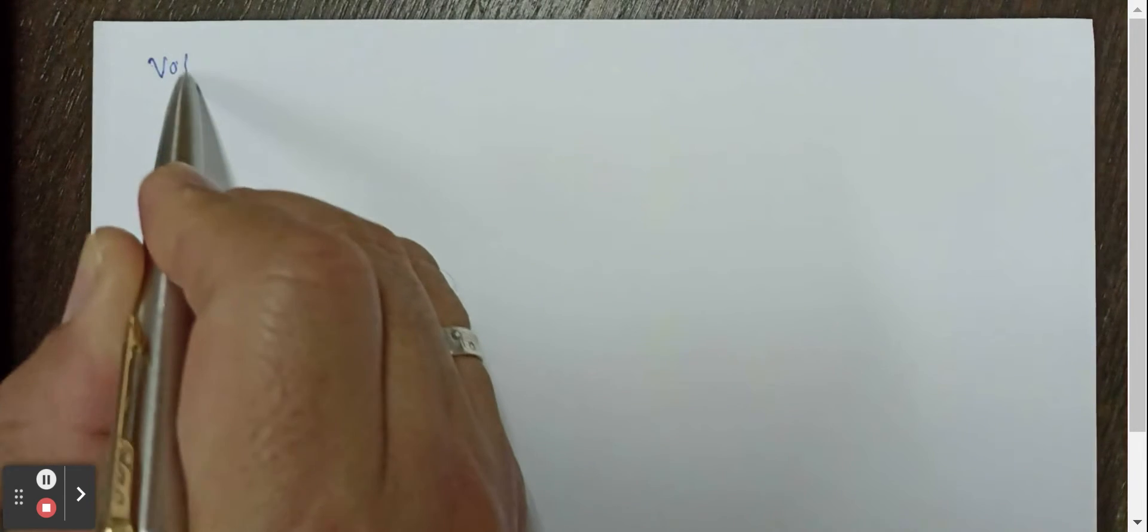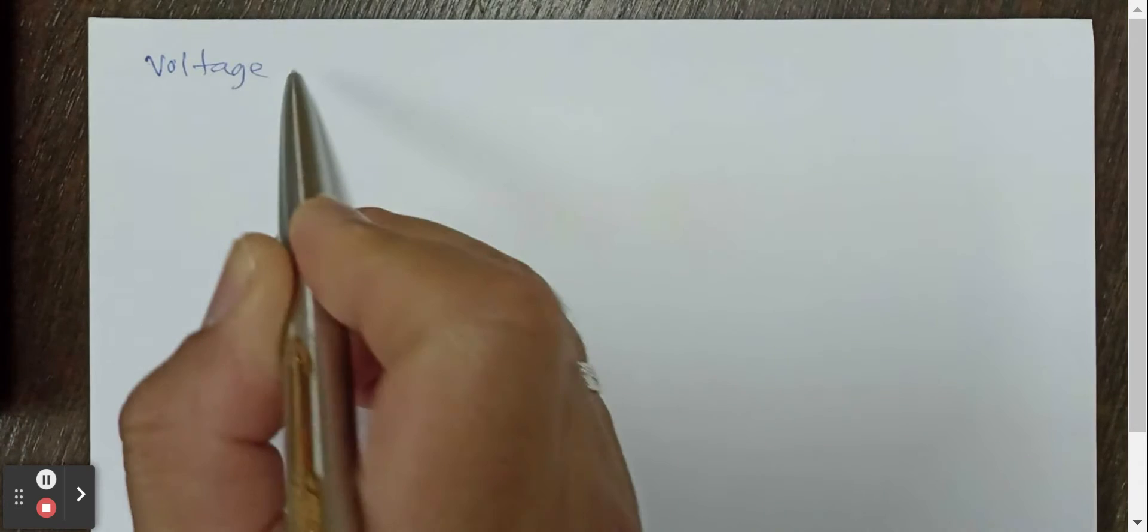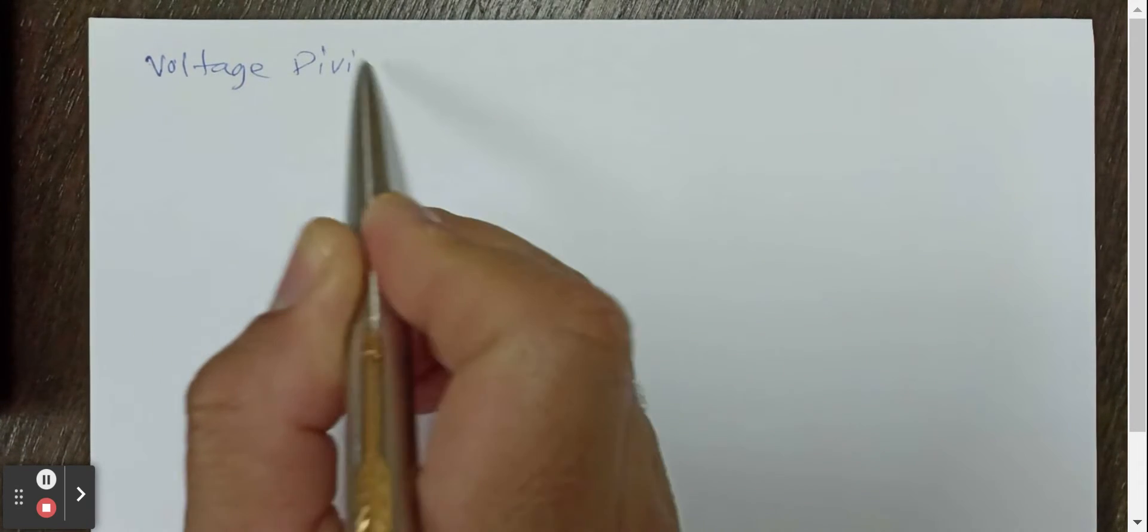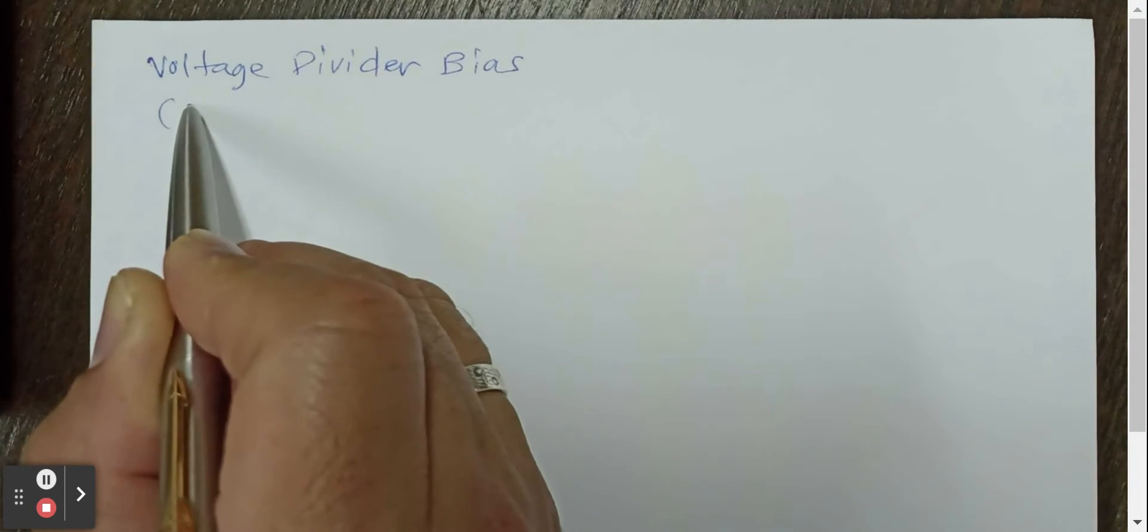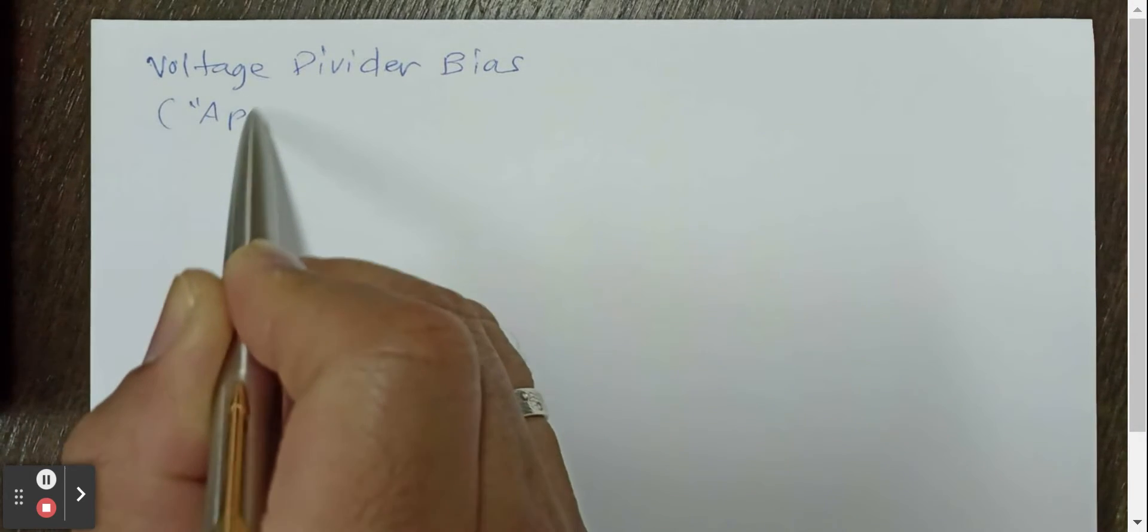To calculate DC calculations on a voltage divider bias NPN BJT amplifier. So the name of this is voltage divider bias. And we will be doing the approximate analysis.